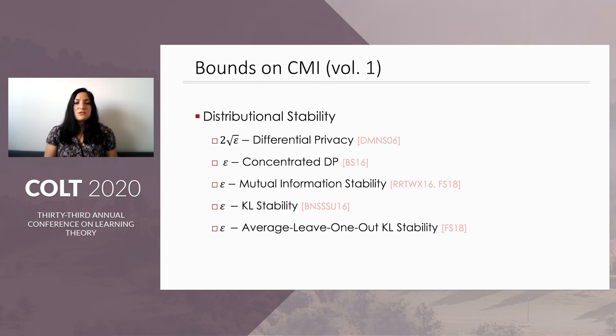First, there's distributional stability conditions such as two squared epsilon differential privacy, epsilon concentrated differential privacy, epsilon mutual information stability, epsilon KL stability, and epsilon average leave-one-out stability, and all these imply an epsilon n bound on the CMI of the algorithm. And this holds for the mutual information as well.